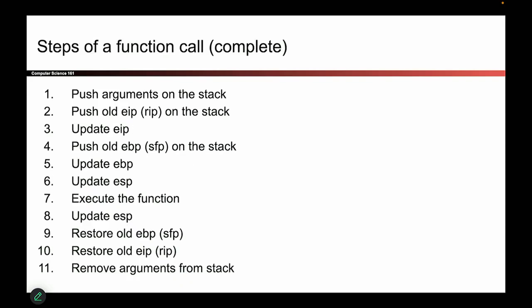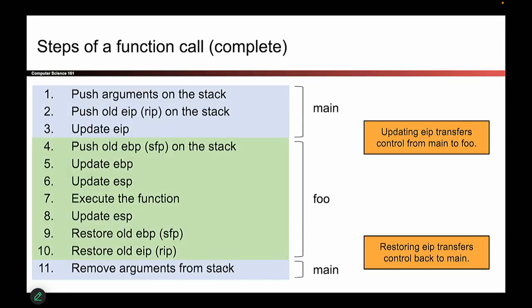So now we're going to show it with all the details — exactly how every register changes and what it looks like in x86 assembly. It's going to be 11 steps in total and we're going to walk through all of them. The first few steps are done by main. As soon as we update the instruction pointer, control shifts over to foo, and it is foo's job to do all of that stuff. As soon as we restore the original instruction pointer, we go back to main, and main takes care of the last bit of cleanup. It depends on where the instruction pointer is.